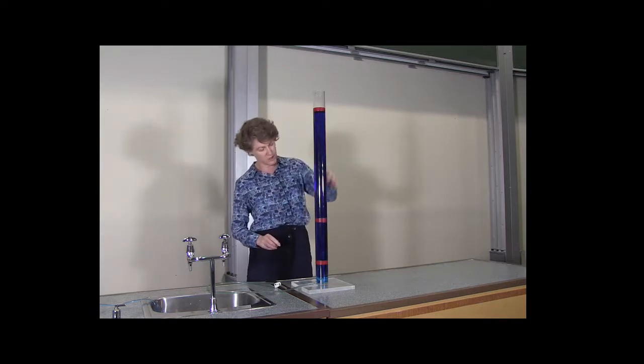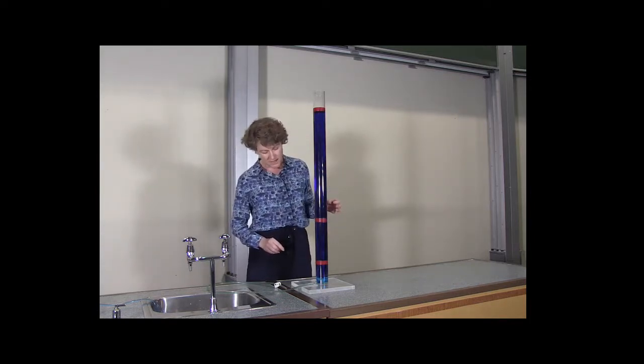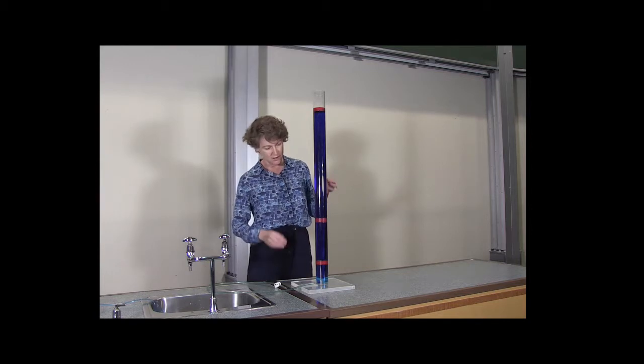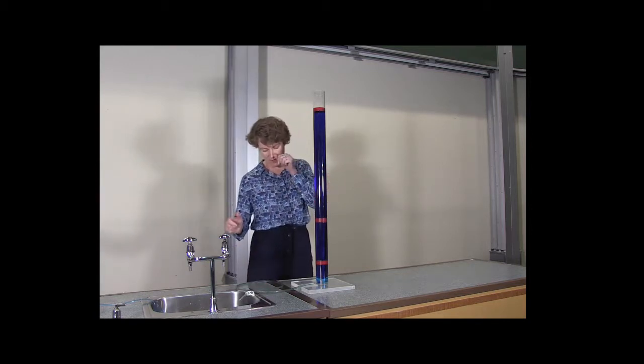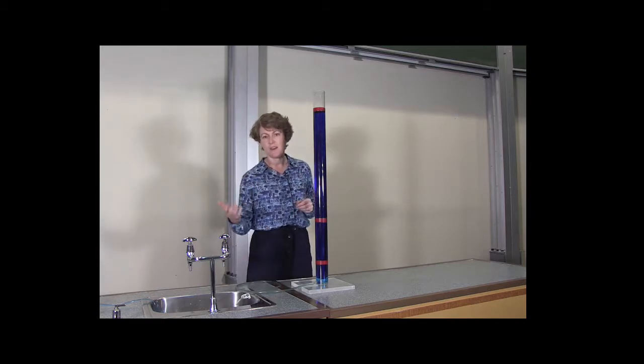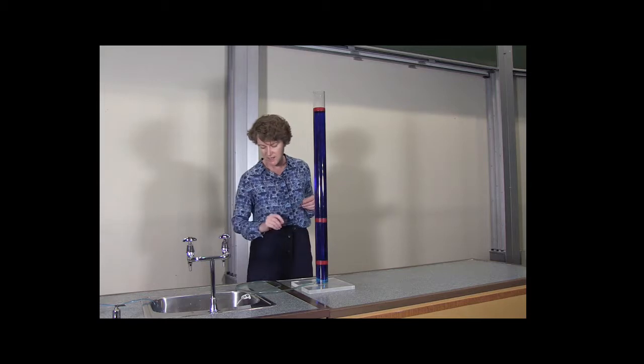We've got water in this column and that is representing charge. When we have water flowing through a pipe, then that represents the charge moving through a wire, which is electrical current.